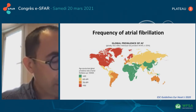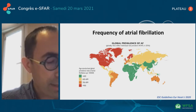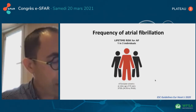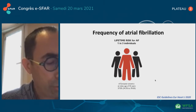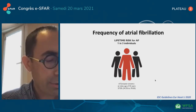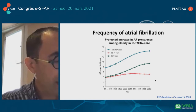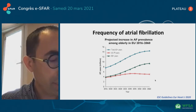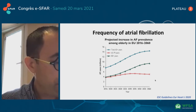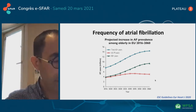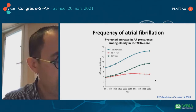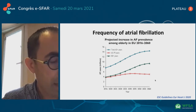Atrial fibrillation is the most common sustained cardiac arrhythmia in adults in the world. The lifetime atrial fibrillation risk estimate is one in three individuals of European ancestry at index age of 55 years. Increasing age is a prominent atrial fibrillation risk factor, but increasing burden of other comorbidities including hypertension, diabetes, heart failure, coronary artery disease, chronic kidney disease, obesity, and obstructive sleep apnea is also important and in progression.